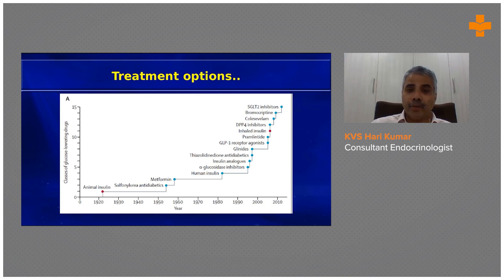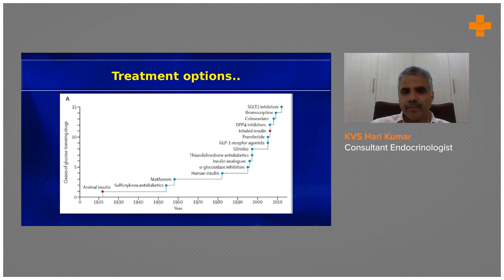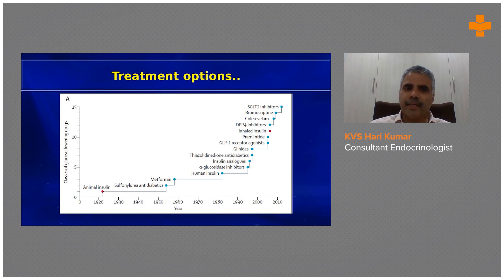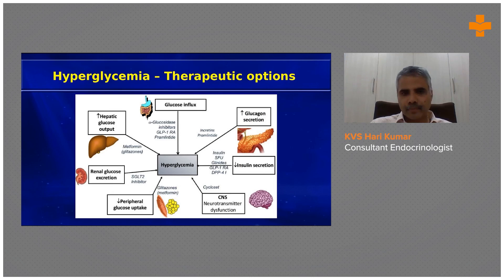The treatment options have been increasing year by year. From 1923 when insulin was introduced until about 1990, there were only insulin, sulfonylurea, and metformin available. But in the last two decades, almost 20 new groups of drugs have become available, which increases options but also increases confusion about what to use for a given patient.